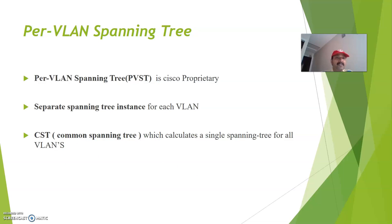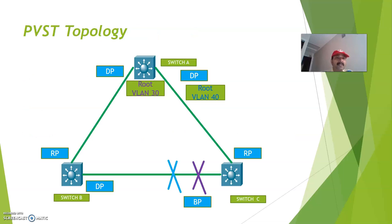Now let us understand the PVST topology. Here I have connected three switches — Switch A, B, and C — all connected by means of trunk links. Switch A will be elected as the root switch because of the lowest priority or the lowest MAC address, and the corresponding ports are always designated ports.